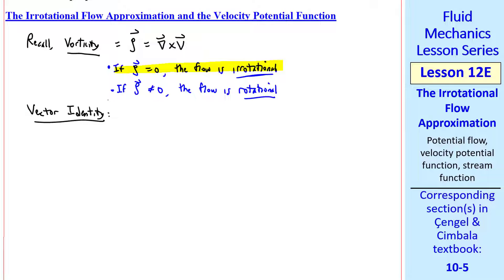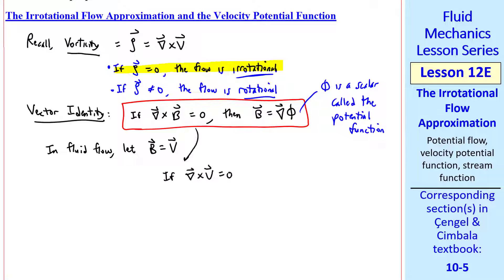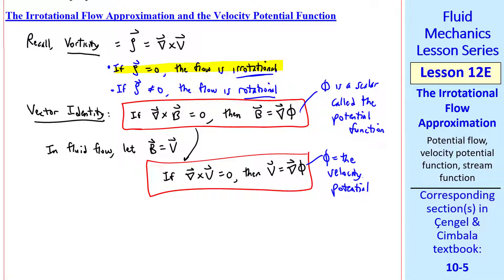Here's a vector identity from math class: if del cross some vector b equals zero, then b can be expressed as the gradient of some scalar function phi, called the potential function. In fluid flow, we let b equal the velocity vector. So if del cross v equals zero, then v equals the gradient of phi, and phi is then the velocity potential, or velocity potential function.